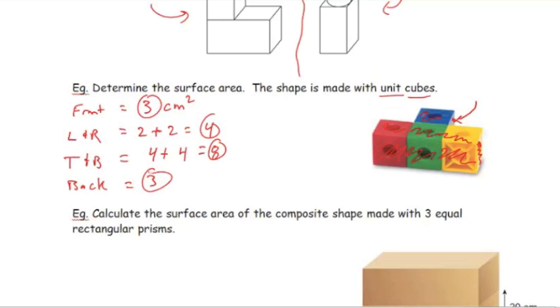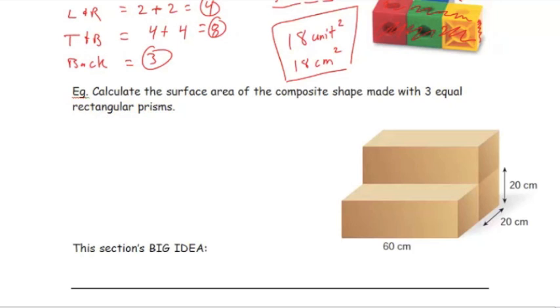So the surface area is just adding up all of the areas of each face. So three plus four plus eight plus three gives us seven plus eight is fifteen plus three is eighteen. Unit squared, or in our case, we said that they were centimeters. That's going to be eighteen centimeters squared.